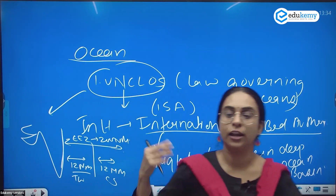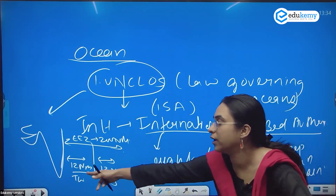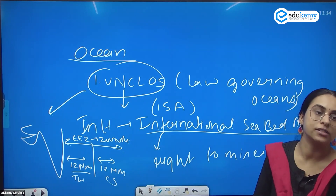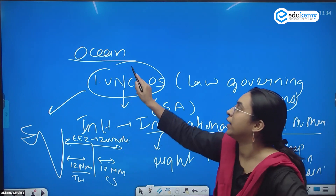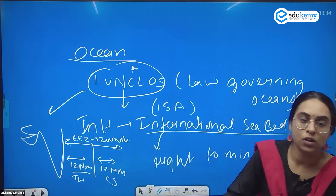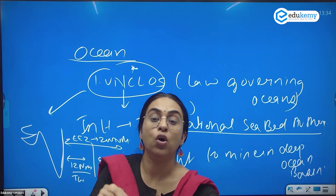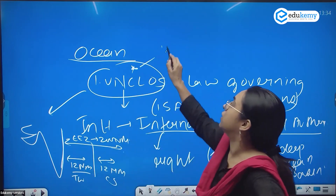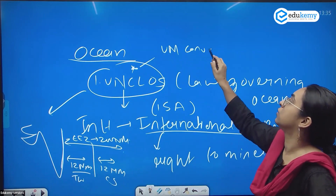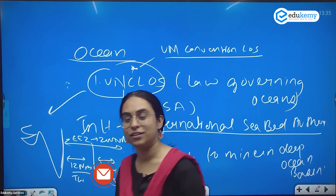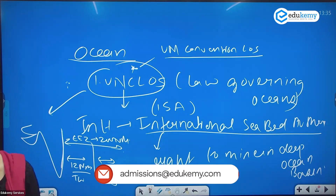These terms — territorial water, contiguous zone, and Exclusive Economic Zone — are all defined by UNCLOS, which stands for United Nations Convention on the Laws of the Sea. Notably, the USA and China have both not agreed to UNCLOS and are not part of it.